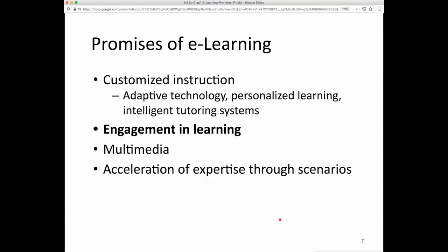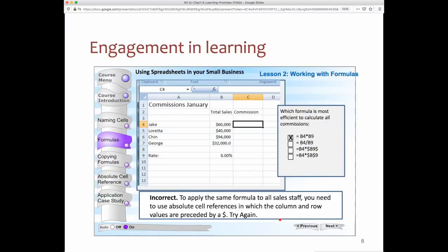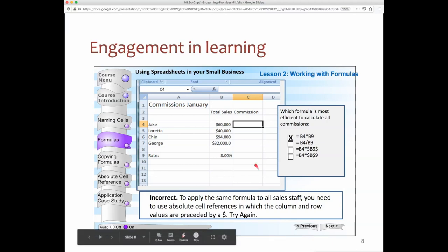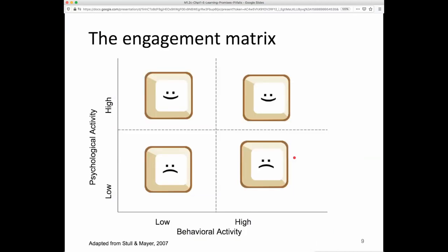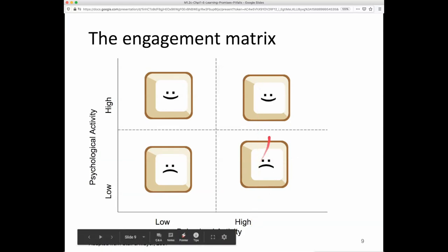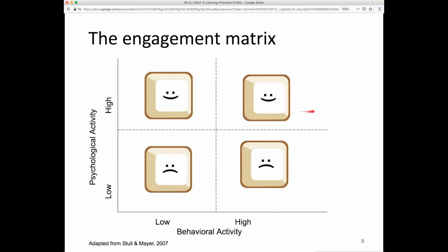A second promise of e-learning is how it engages learning. Being more learner-centered and having learners actively do something in the interface and receive feedback can help them stay engaged. Especially in an asynchronous learning setting where students are on their own, that kind of interaction can maintain engagement.